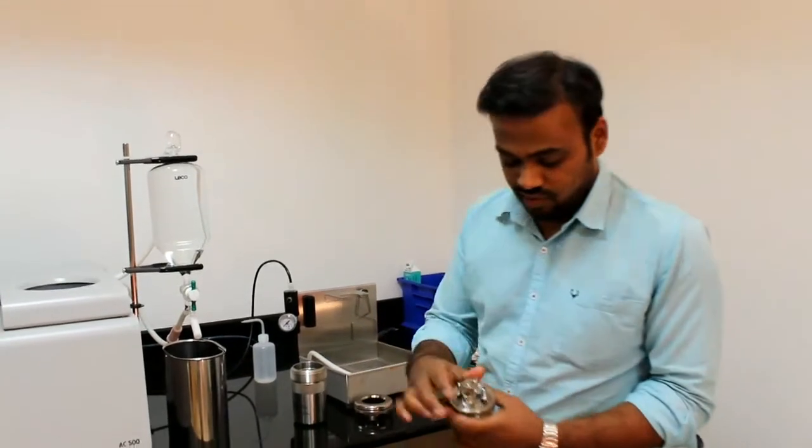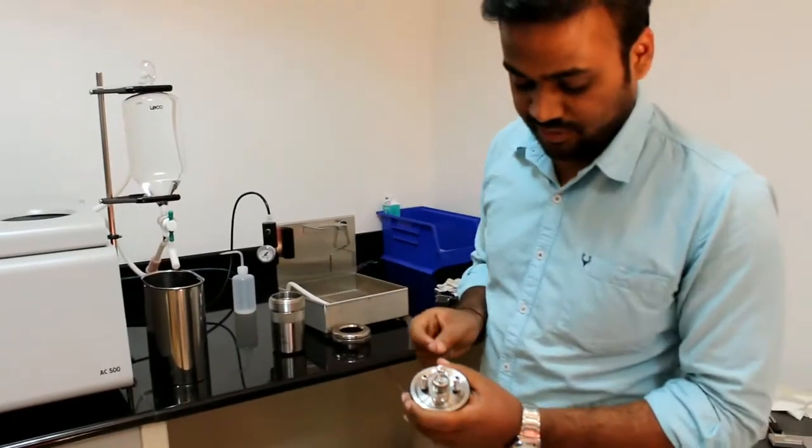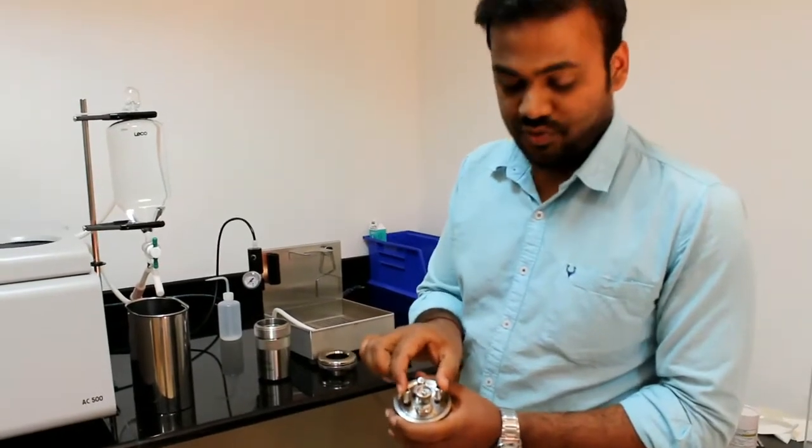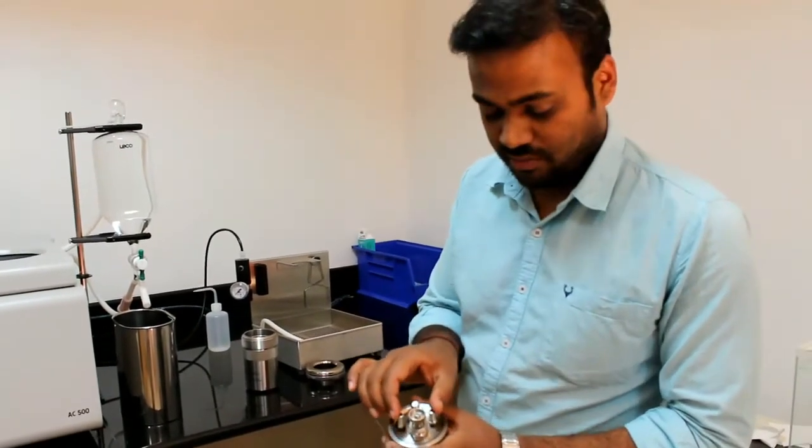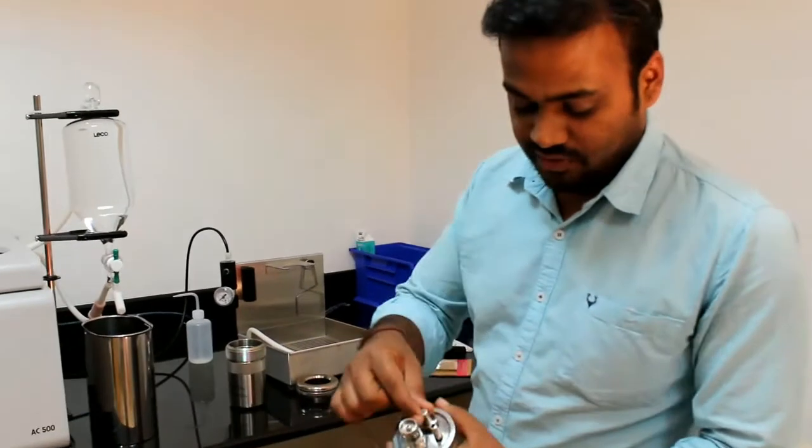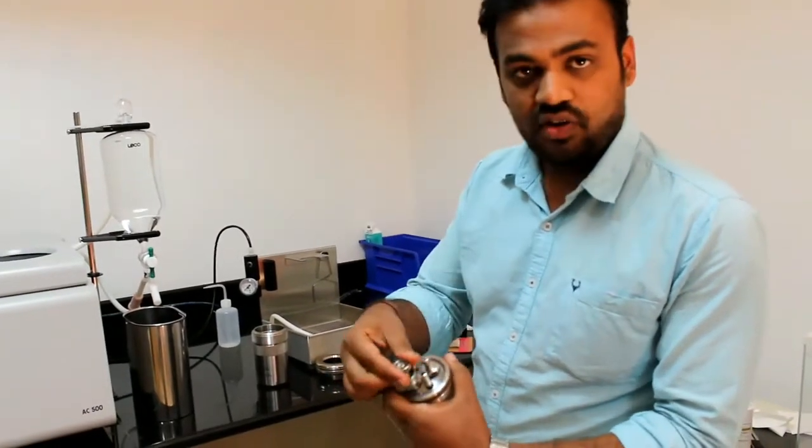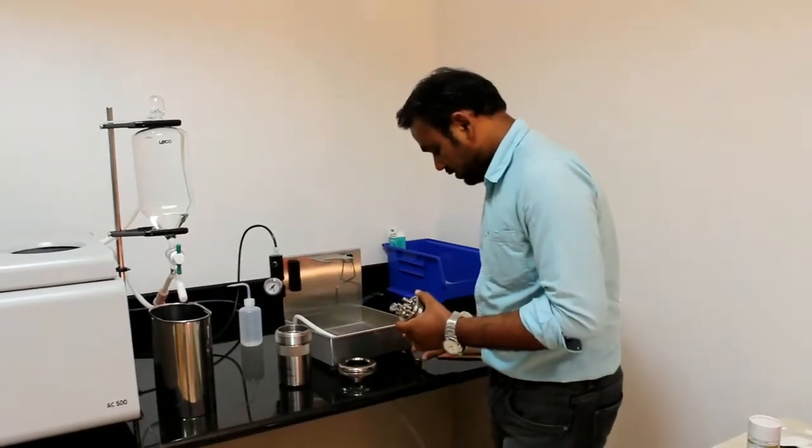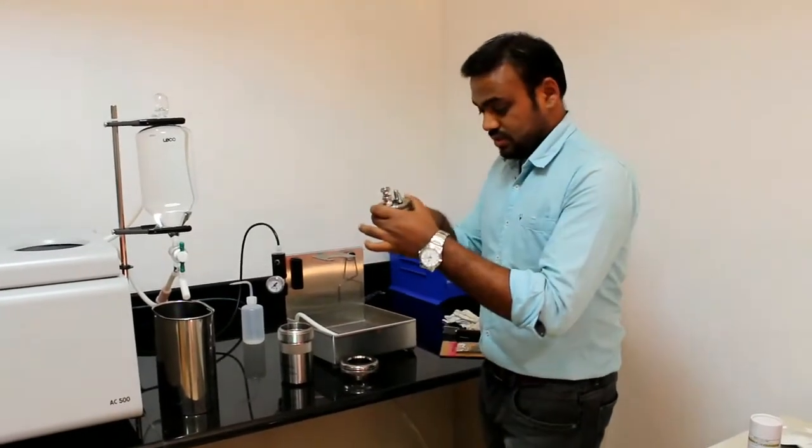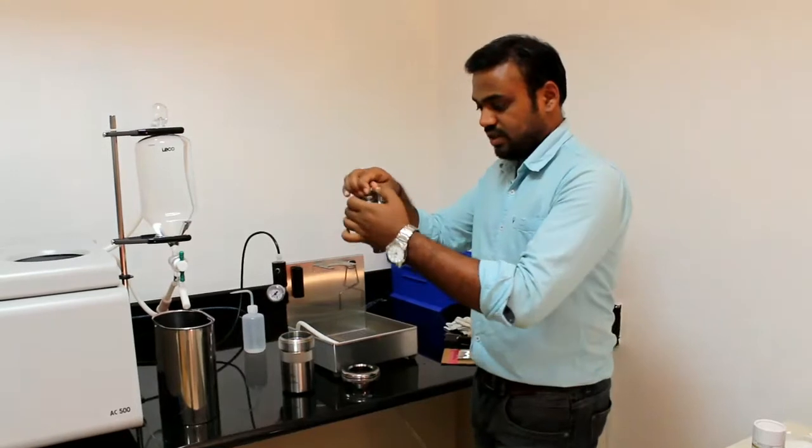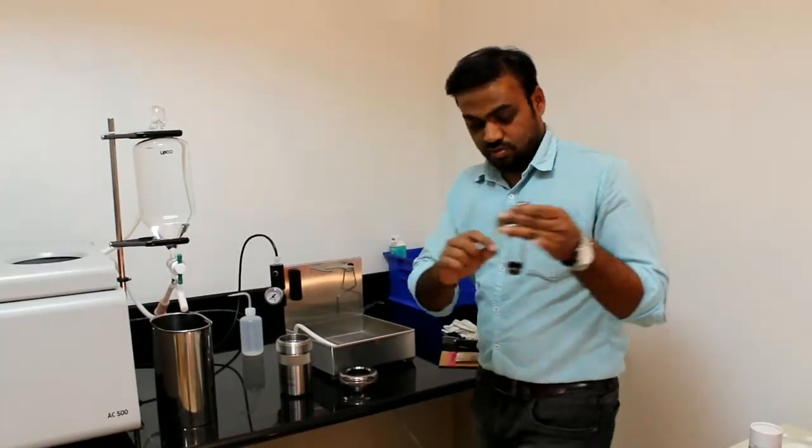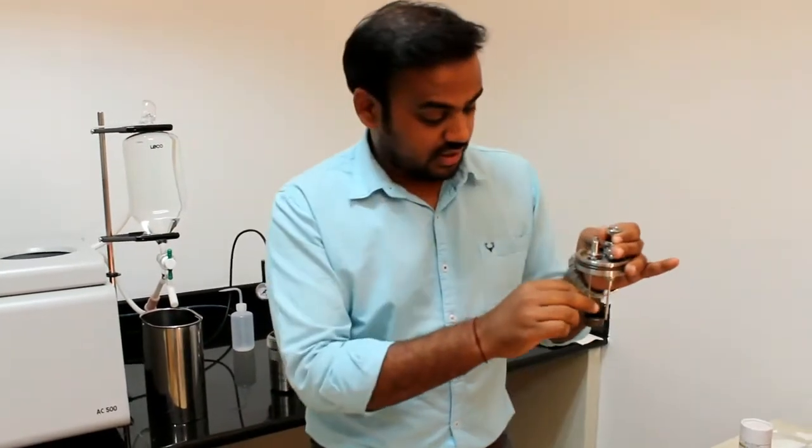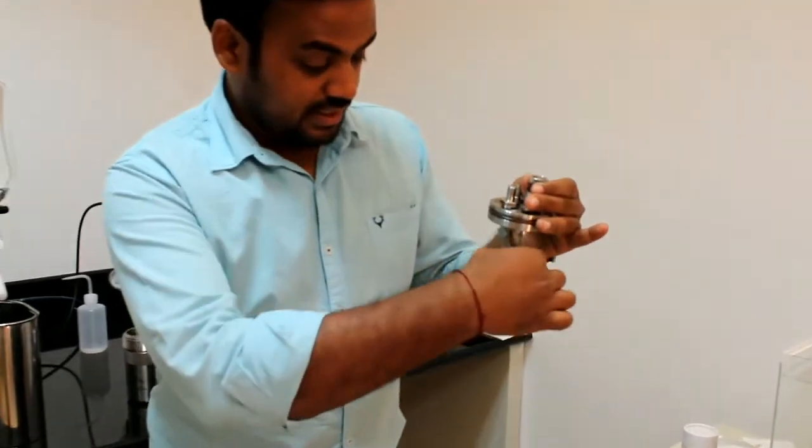In this wire, we have actually four sections in this combustion vessel. These two are for electrodes, which will supply the 29 volts DC voltage. And this is for oxygen filling and this is for oxygen releasing. Now we will place our crucible into the crucible holder. So make sure this wire will touch the sample.